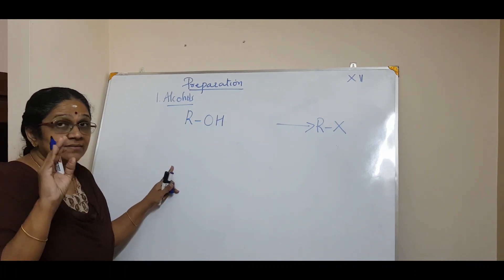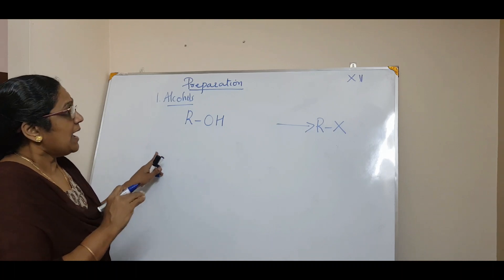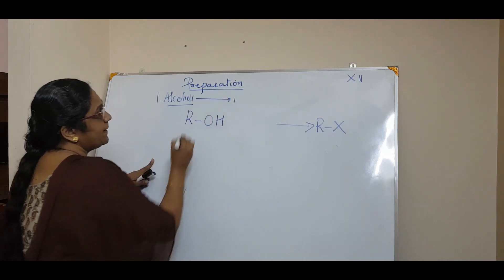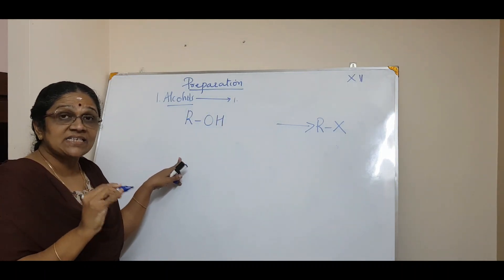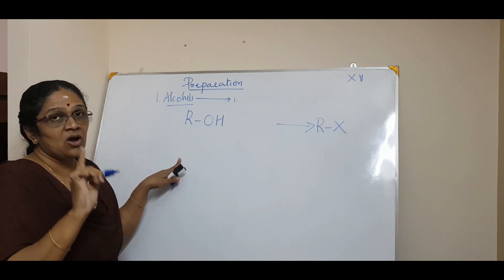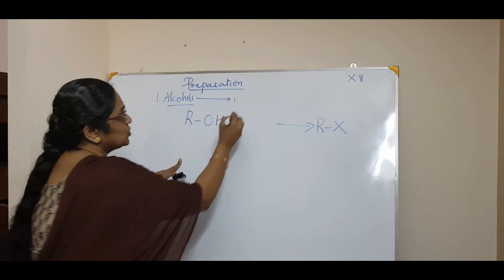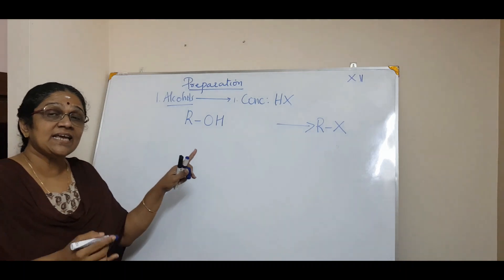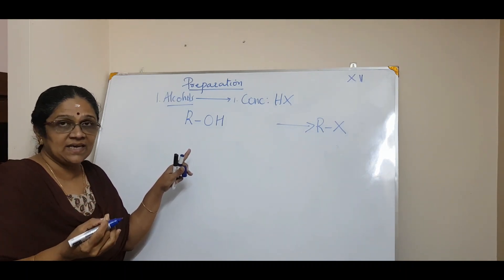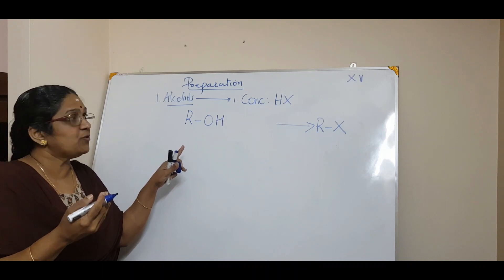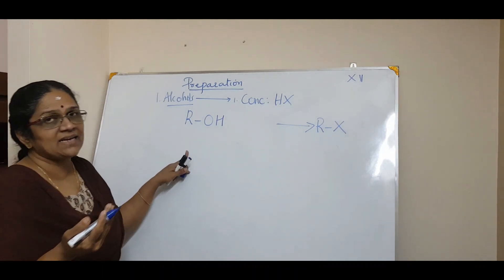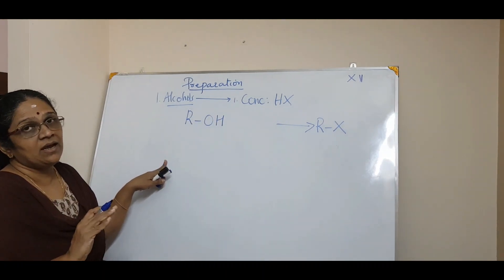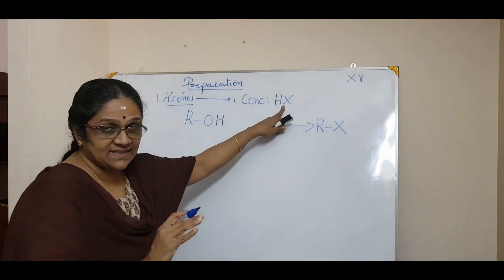There are three methods to prepare haloalkanes from alcohols. The first method is by treating with concentrated halogen acid — HCl, HBr, or HI. We normally don't consider HF because fluorine is very reactive. The second is thionyl chloride (SOCl2). The third is phosphorus halides, either PX3 or PX5.